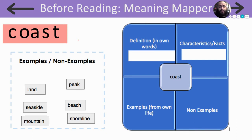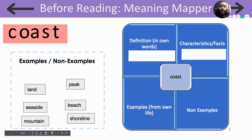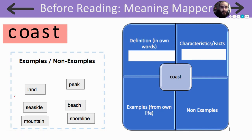Now I want to go back to our focus word: coast. I want you to look at this organizer. On the top left, you're going to write the definition in your own words. On the top right, write characteristics or facts about the word coast. On the bottom left, write some examples. And on the bottom right, some non-examples. You can use the words provided to pick examples and non-examples. Go ahead and pause the video and do that.